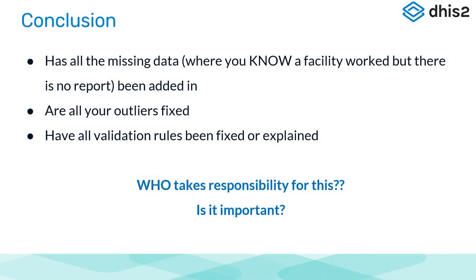In conclusion: has all the missing data — where you know a facility worked but there's no report — been added in? Have you fixed all your outliers? Have all your validation rules been fixed or explained? And who takes responsibility for this? Is it important to do this in your situation?